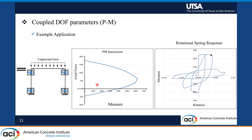We also implemented PM interaction — the classic P-M interaction — inside the material model, where the rotational spring adjusts its hardening branch at every increment based on the applied axial demand. This is quite new within the lumped plasticity framework. For example, when you pull the frame to the left and axial demand increases in a column, the moment yield strength goes up to around 6,000. However, when you push the frame to the right and axial demand decreases, the moment yield strength also decreases to about 5,000 on the other side.